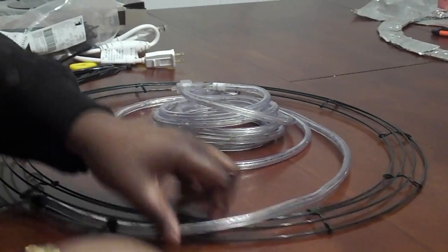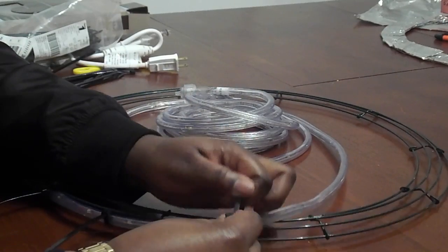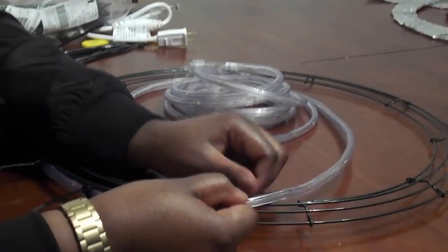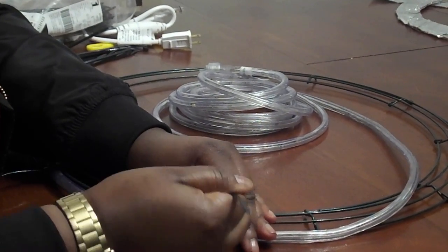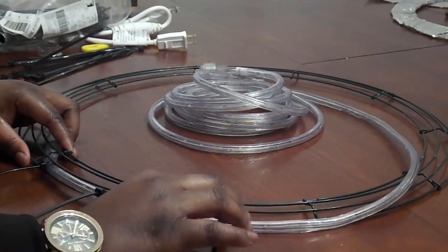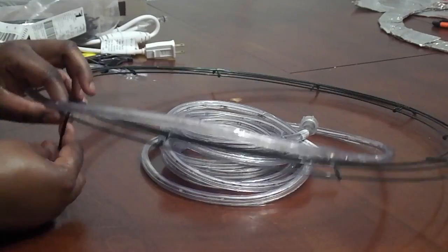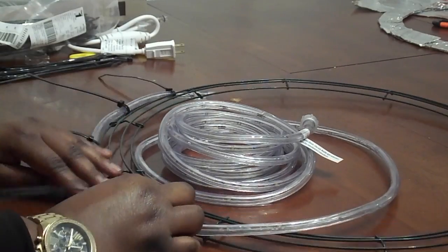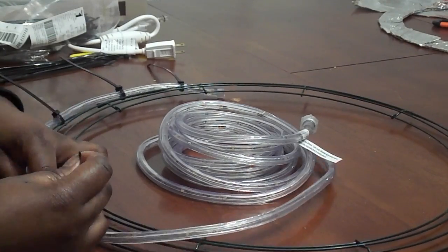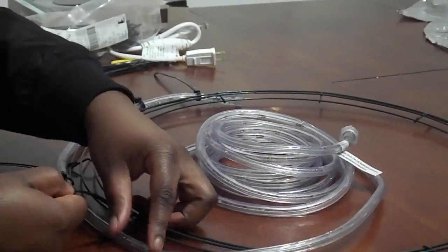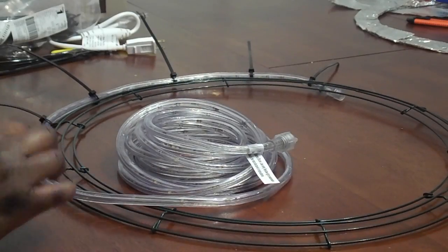Alright, now where I'm fastening the LED rope light is basically where every metal bar is on the wreath. When I first started out, I put it more towards the middle, but as I went on, I put it more towards the bar. So you're just going to go around on the outside, just securing and fastening the zip tie and the LED rope light to the outside of the rim.